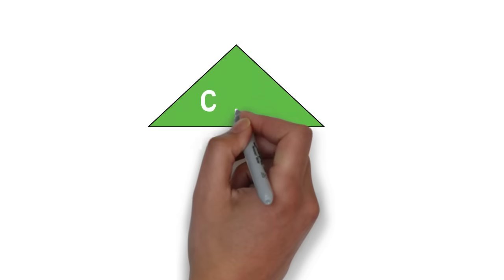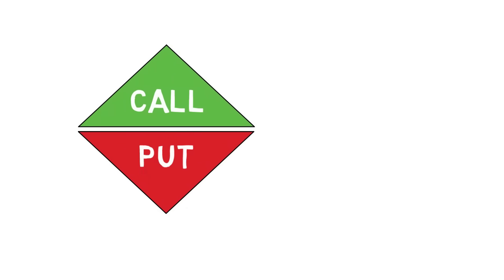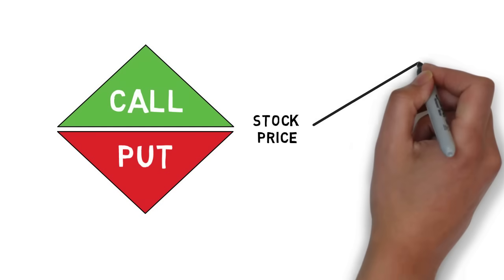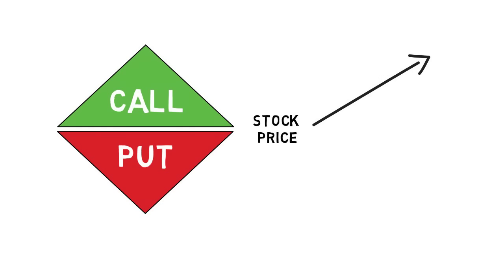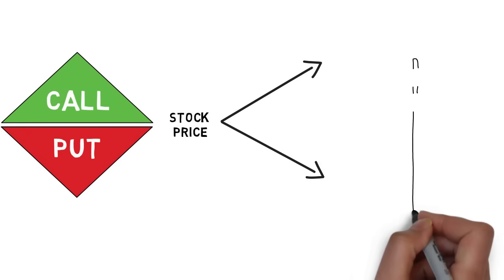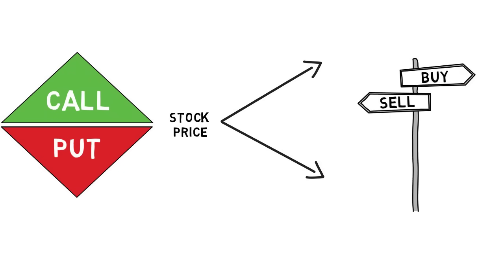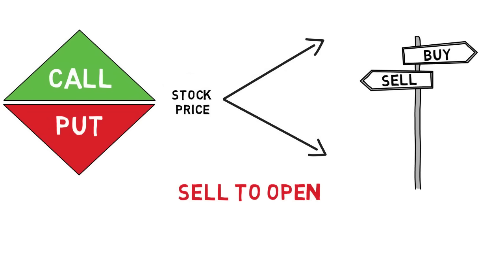There are two types of options: calls and puts. If you buy a call, you want the stock to go up. If you buy a put, you want the stock to go down. Since there are two sides to every market, you can also do the opposite, where you would sell the option as an opening trade, and hopefully buy it back at a lower price as a closing trade.